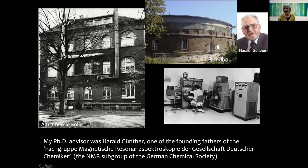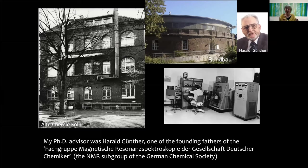I worked in what was called the round building, part of the Prussian fortifying walls around Cologne, where the spectrometer stood. It was a Varian HA-100, and behind the building were train tracks. We had to time our spectra carefully because every time a freight train went past, you would see a signal on the oscilloscope. This building was built in 1841. It's since been renovated and given to the university.